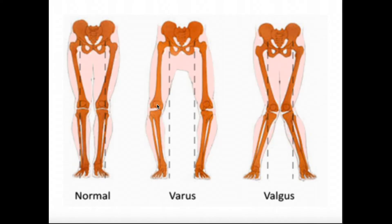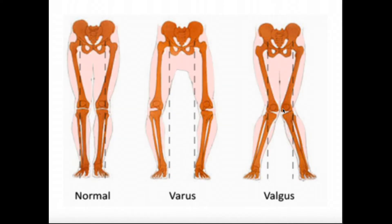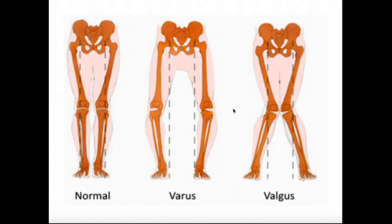If we look at varus, a varus stance is a stance where the knees are oriented much farther outward. Valgus means the knees are pointed inward. Valgus is considered knock-kneed, where the knees could actually knock together. Varus is often called bow-legged, because the knees bow away from each other. It's really important to understand these stances — varus and valgus.